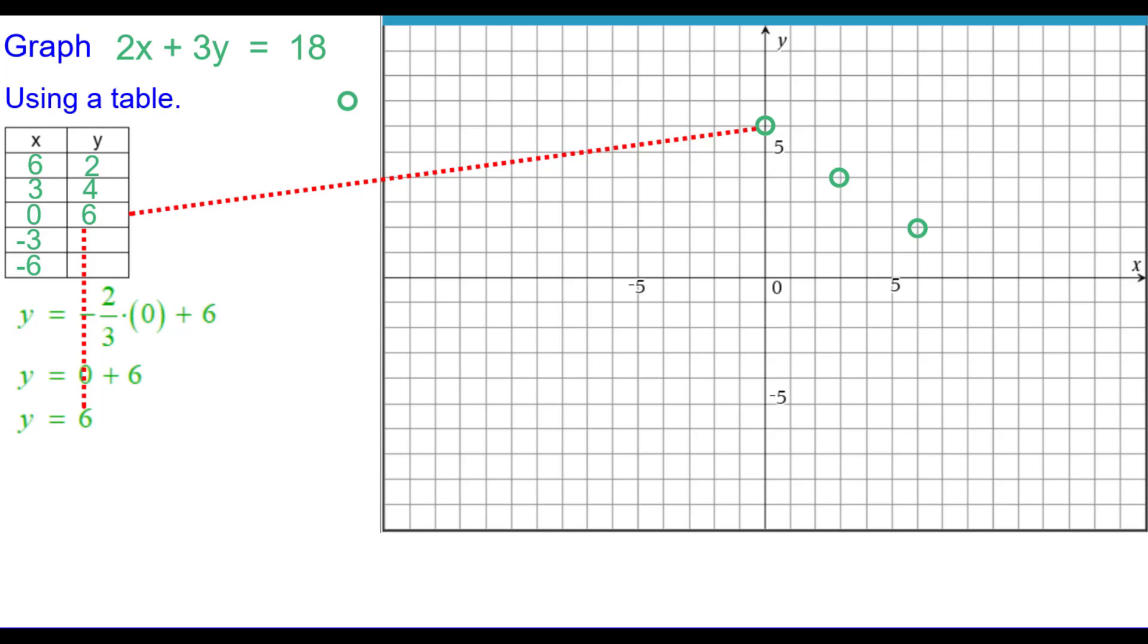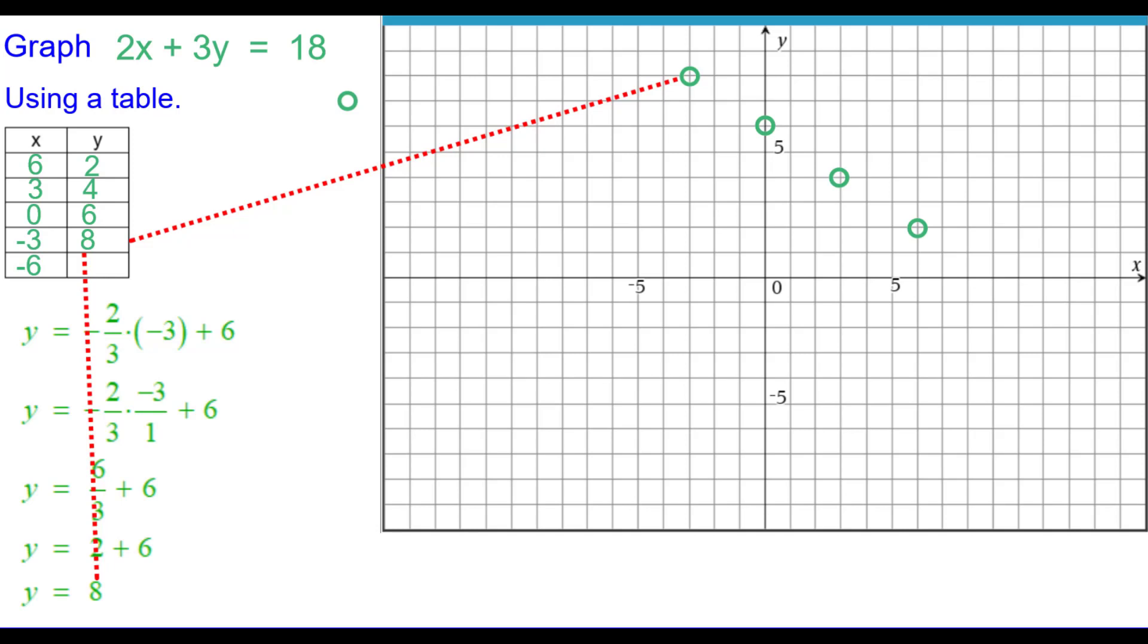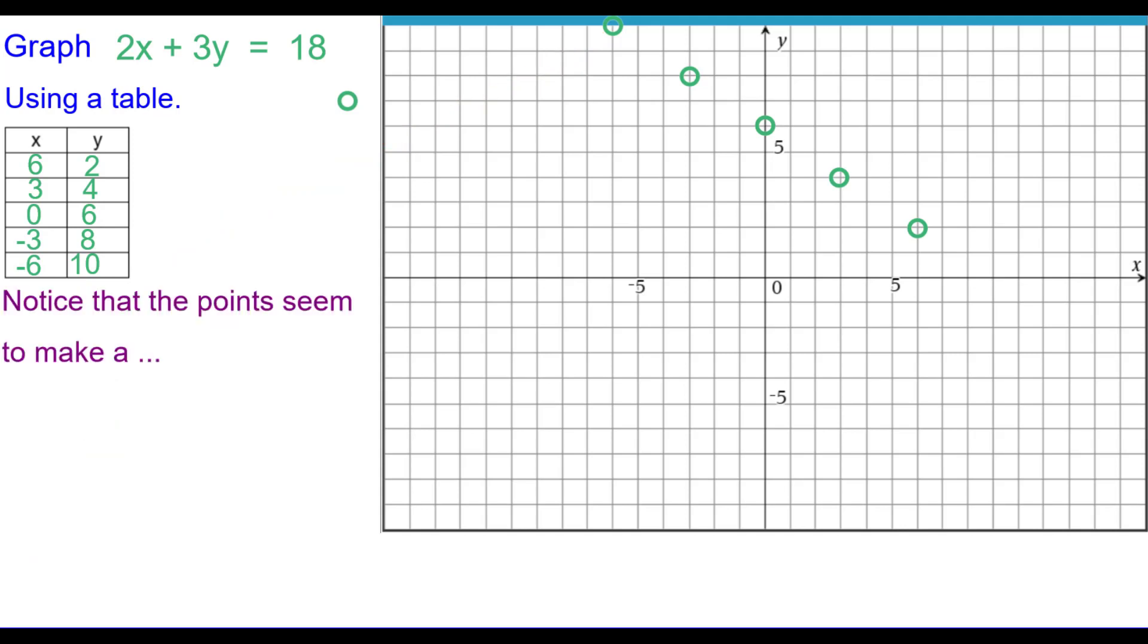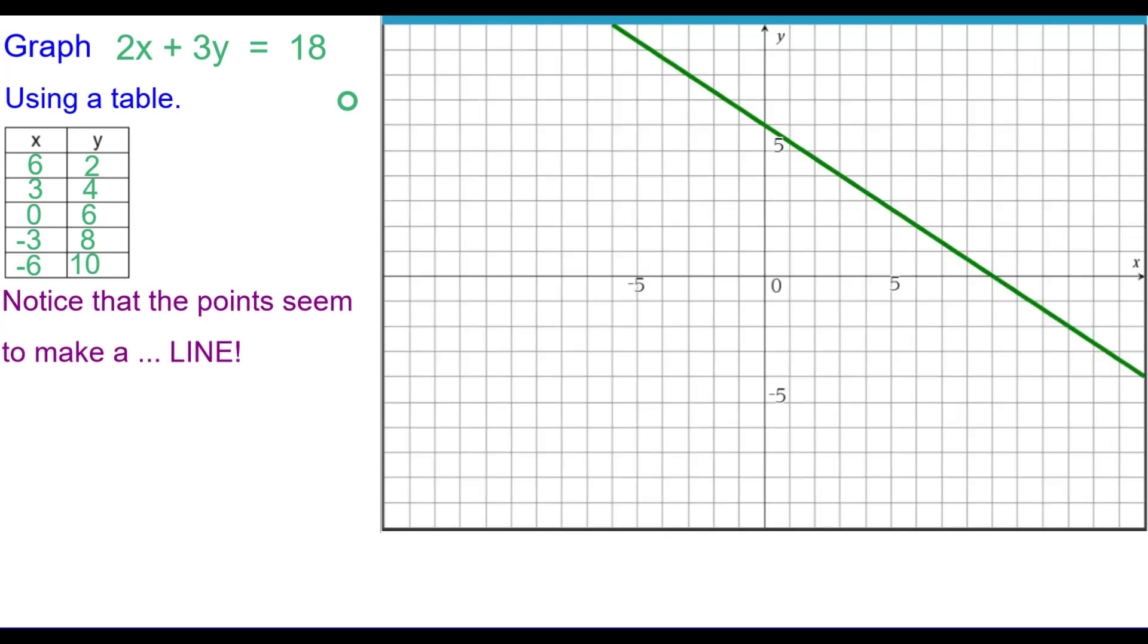When X is negative 3, we found Y to be positive 8. And we plot that point. And when X is negative 6, Y is equal to 10. And we plot negative 6 comma 10. Again, pause or rewind as needed. Notice that the points seem to make a line. So let's go ahead and connect the points. And that's our graph.